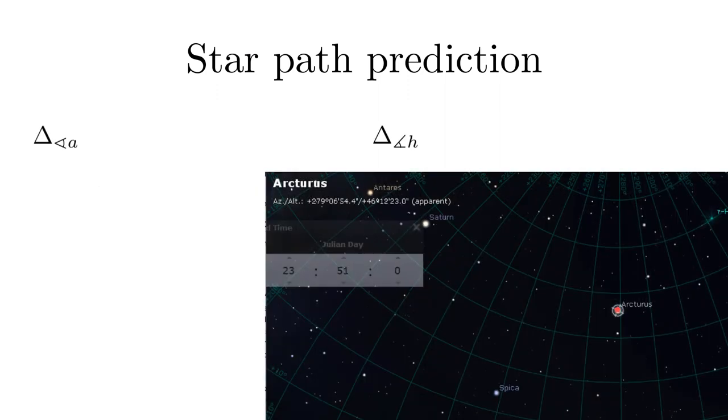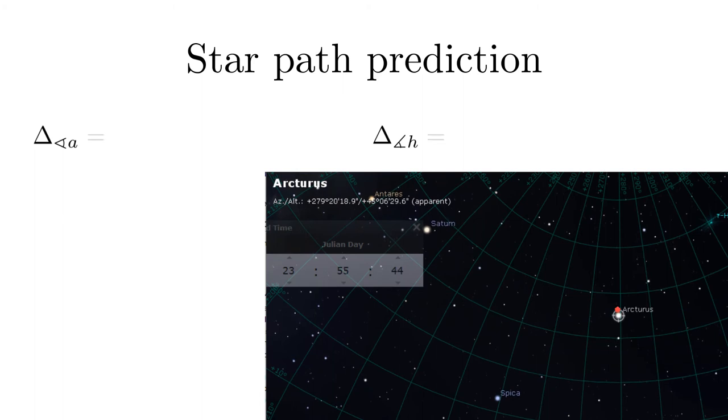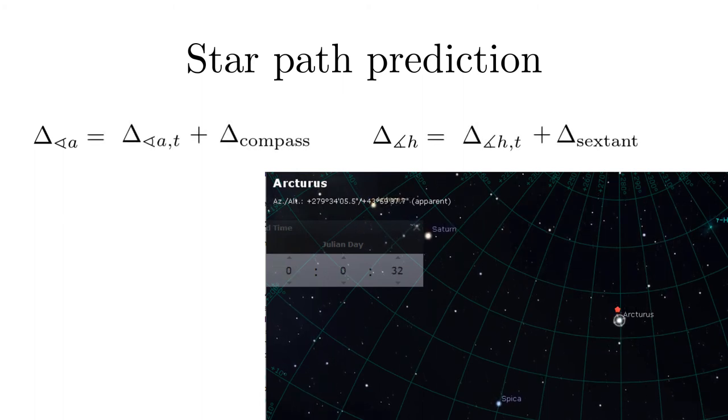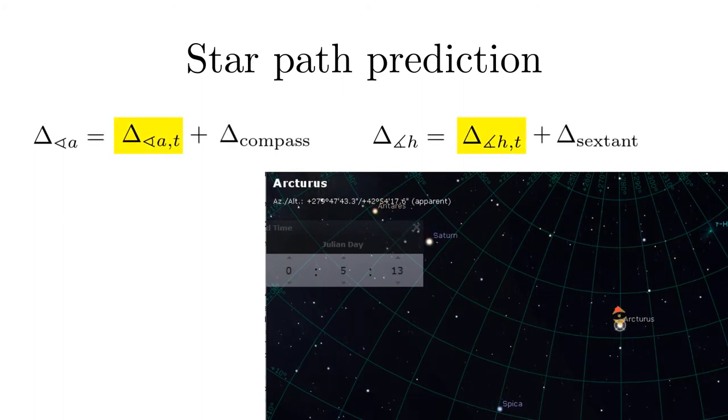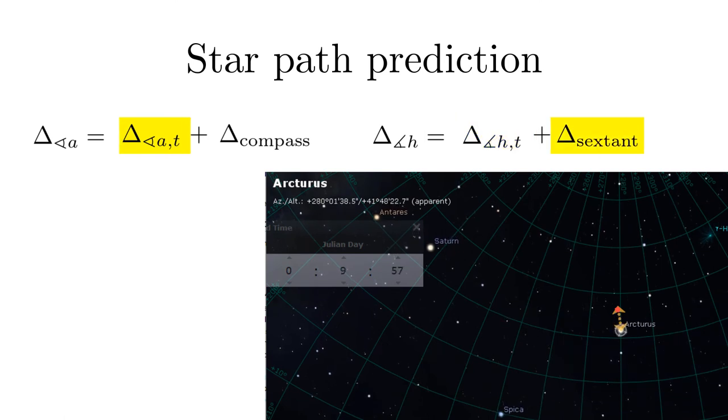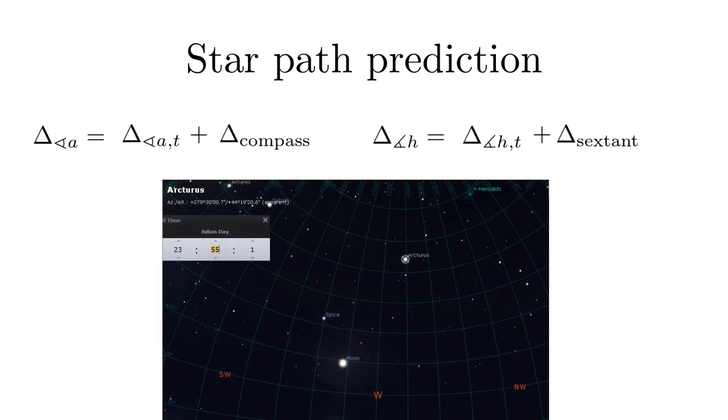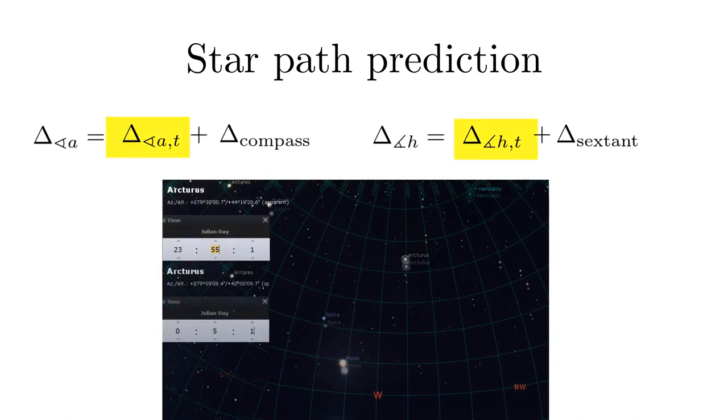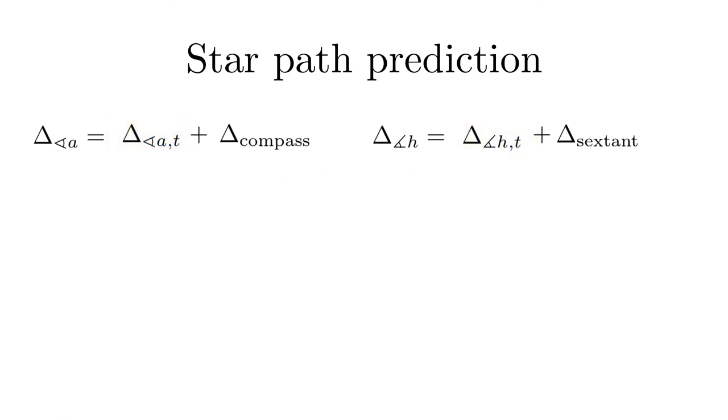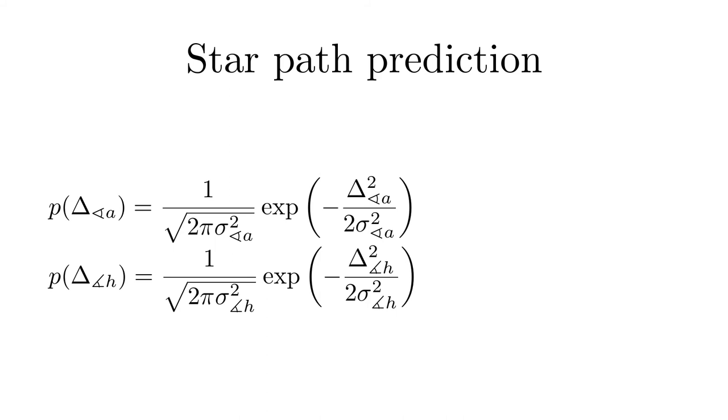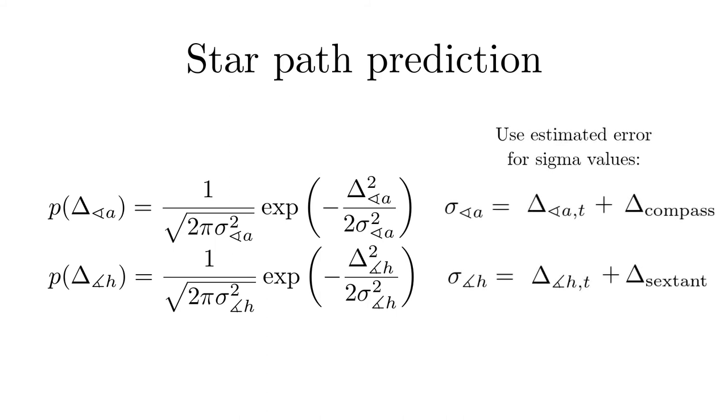The uncertainty of his angle measurements is given by the sum of the deviations due to the time shifts plus the uncertainty of his sextant and compass. From test measurements, he knows the approximate deviations of the angles due to the time inaccuracy. We assume that the deviations are normally distributed with the derived sigma values.